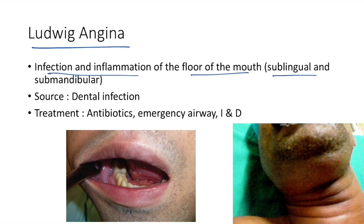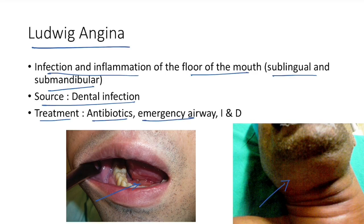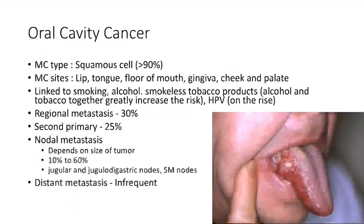Ludwig's angina is infection and inflammation of the floor of the mouth, usually involving the sublingual and submandibular region. The source of infection is dental infection. Treatment: antibiotics, emergency airway, and incision and drainage.